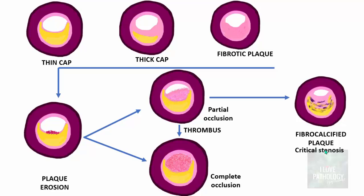The consequences are myocardial infarction if coronary blood vessels are involved, cerebral infarction or stroke if cerebral blood vessels are involved, and gangrene if peripheral blood vessels are involved. These are sudden events. With this I conclude part 3 of atherosclerosis and the entire topic on atherosclerosis across these three parts.